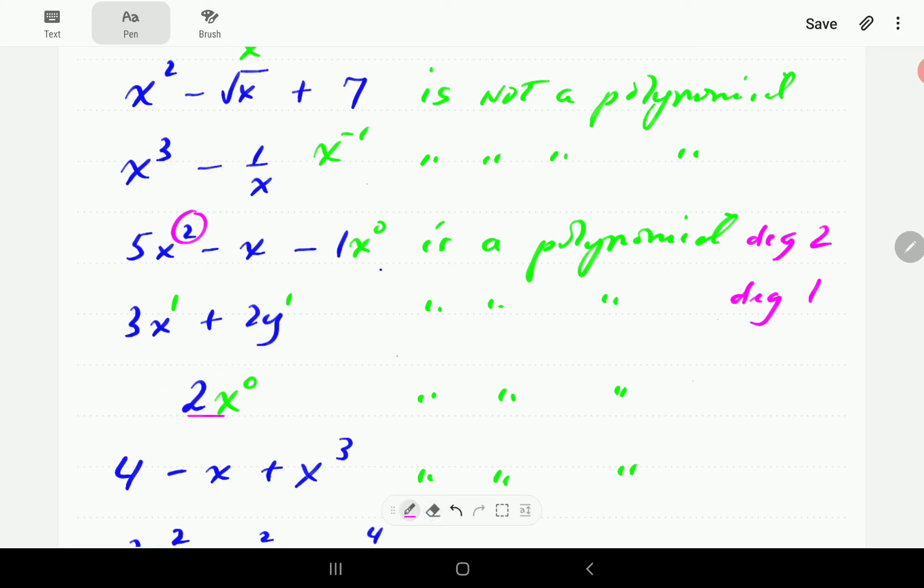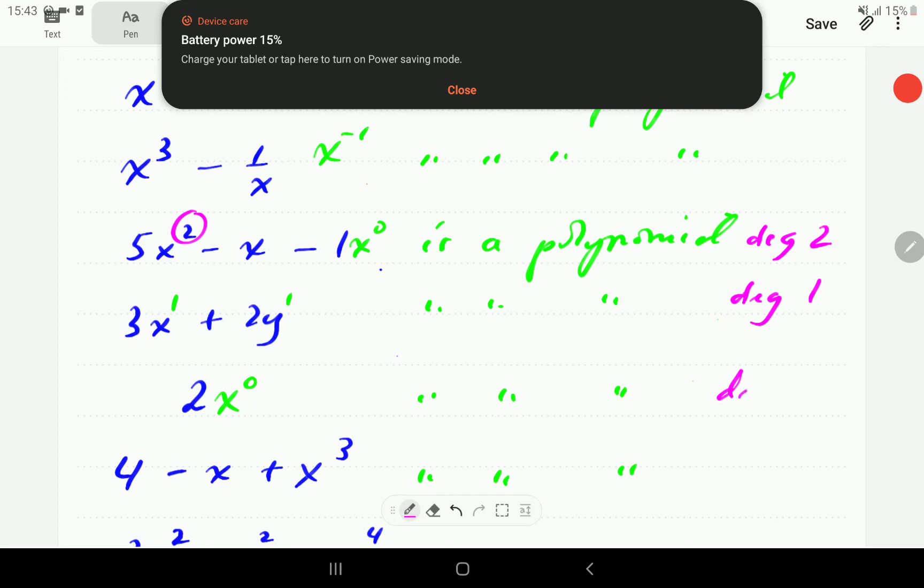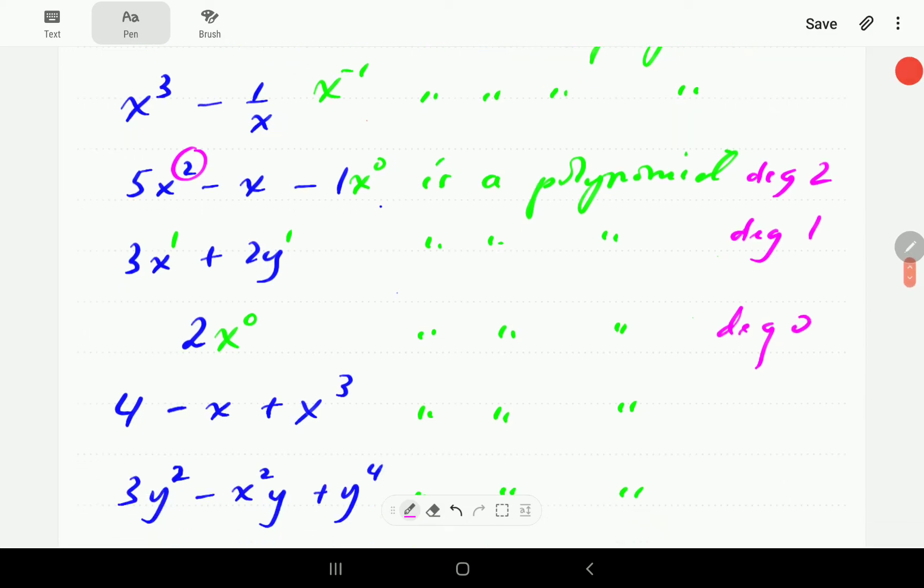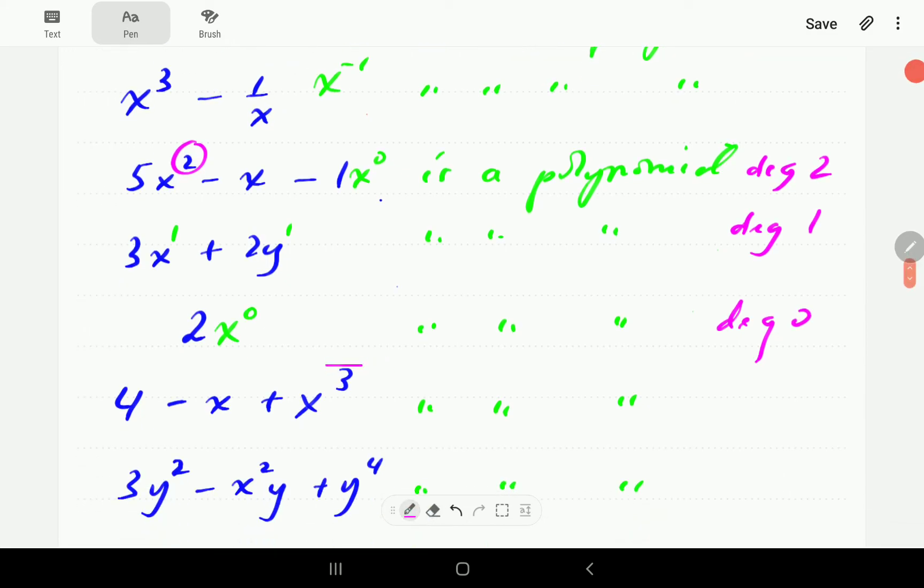For this one, the highest degree is 0. So this is a polynomial of degree 0. And this one, the highest power is 3. So that's a polynomial of degree 3.